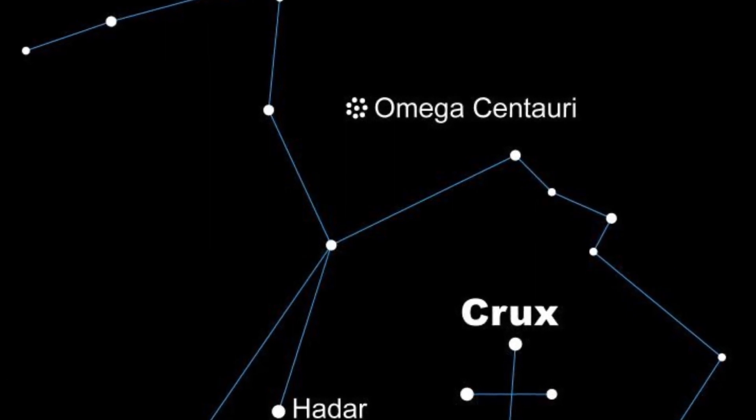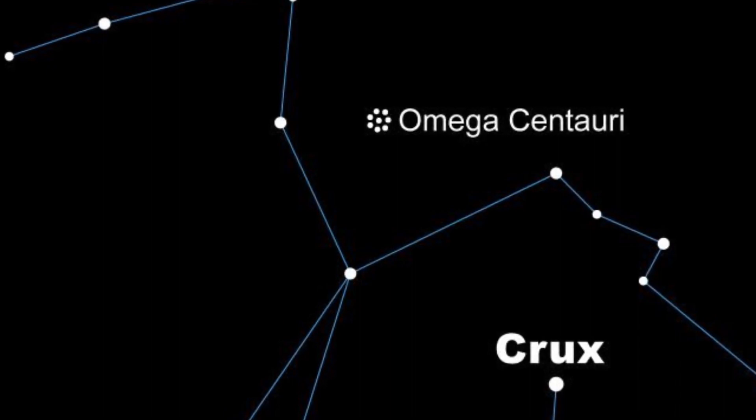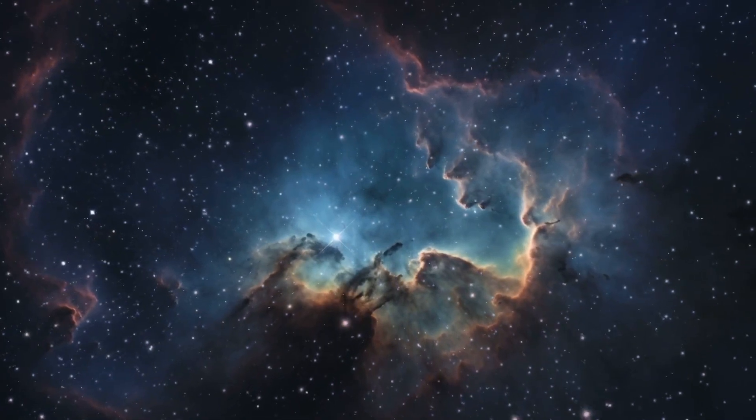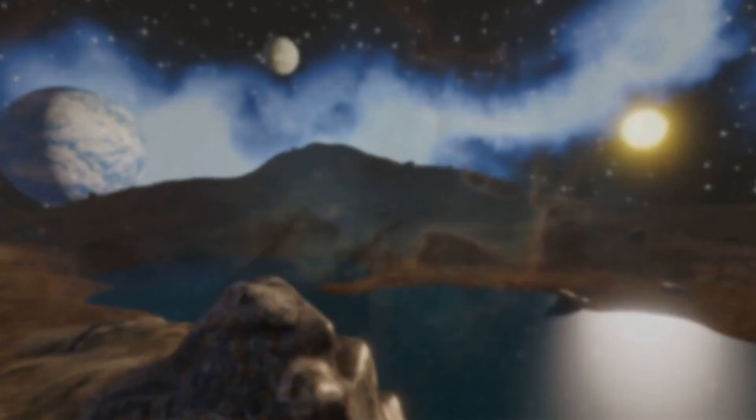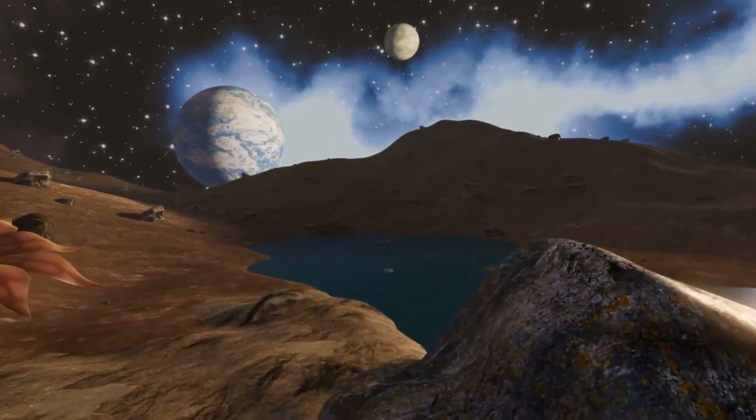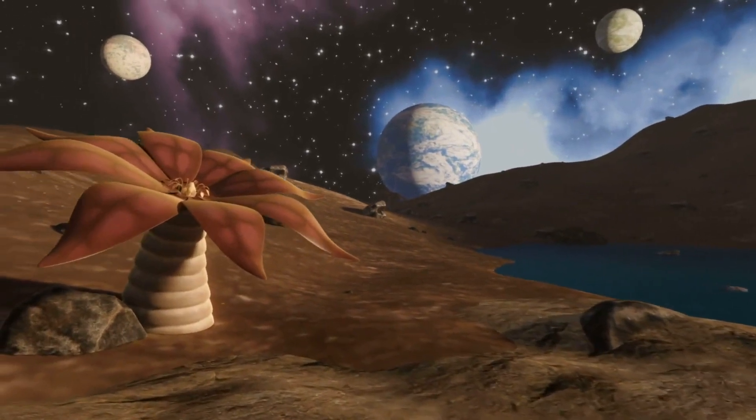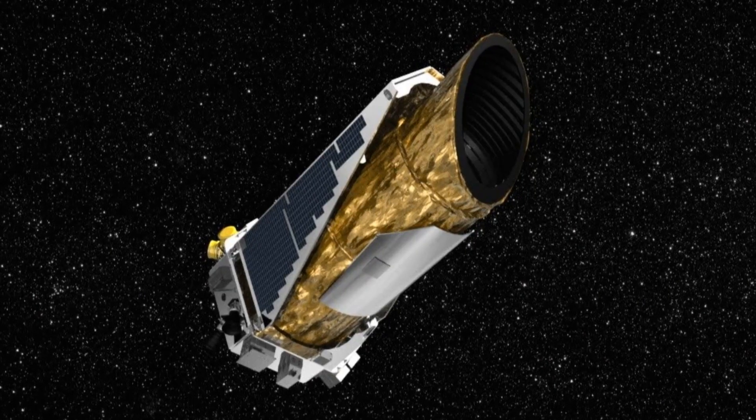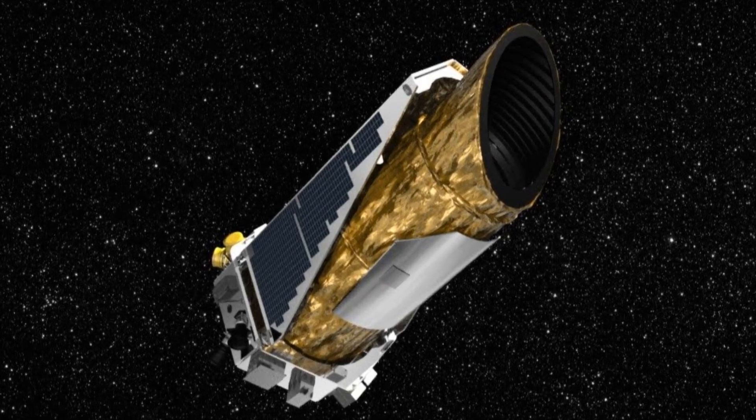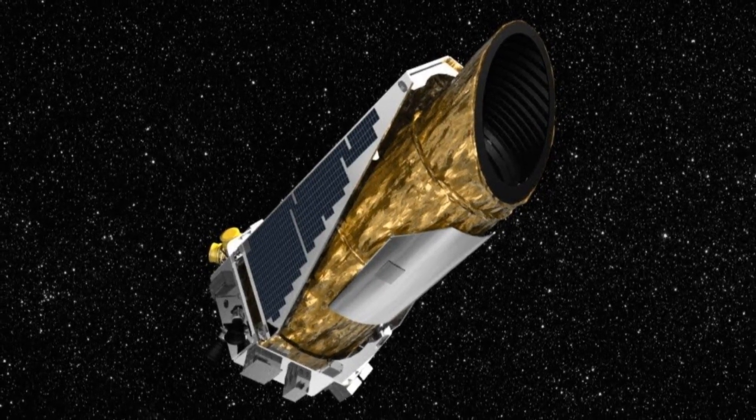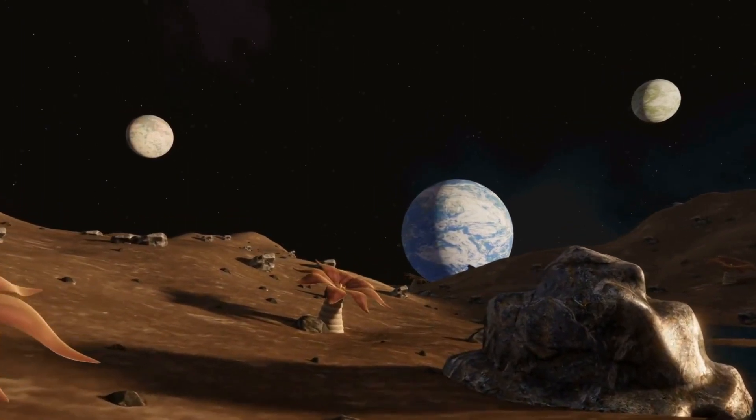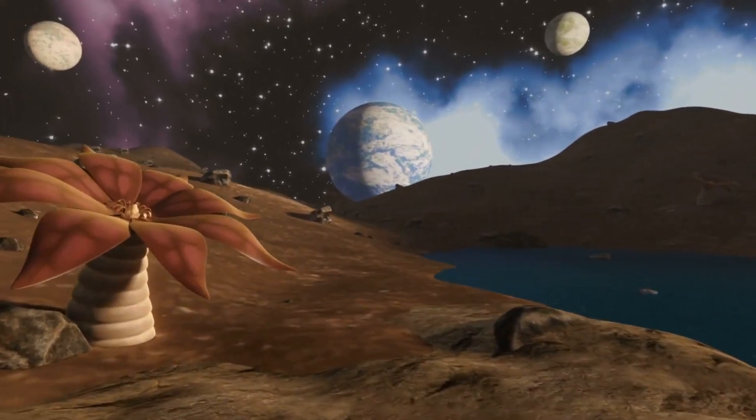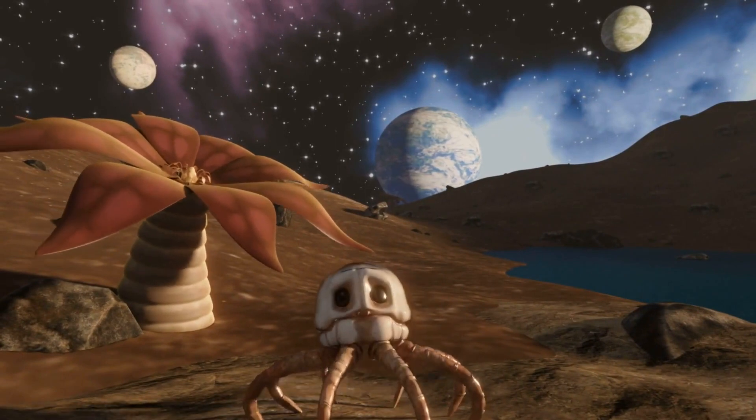Spotting exoplanets is no easy task, considering they play hide and seek behind the brilliance of their host stars. However, advancements in technology allow astronomers to capture elusive exoplanets in action, a cosmic paparazzi moment. Detection methods include observing gravitational wobbles induced by exoplanets and utilizing the transit method, where a planet dims its star's brightness as it passes in front. The Kepler telescope, through its ingenious use of the transit method, has played a pivotal role in our understanding of exoplanets, contributing to the unveiling of more than 4,000 of these distant worlds. This wealth of discoveries has provided researchers with crucial insights into various aspects of exoplanets, including their size, orbital distance, and temperature preferences.